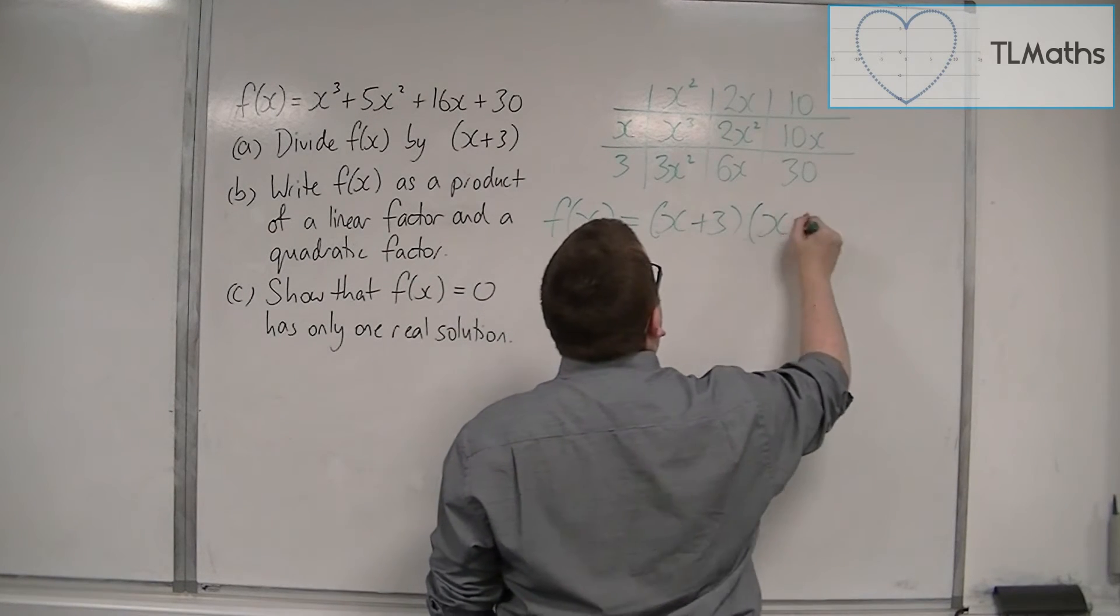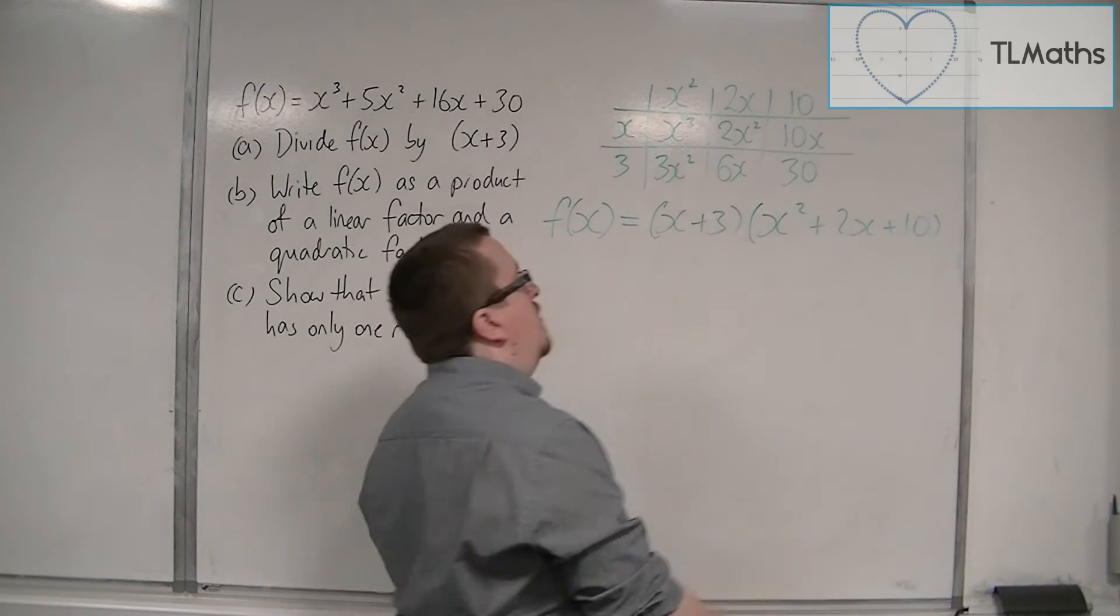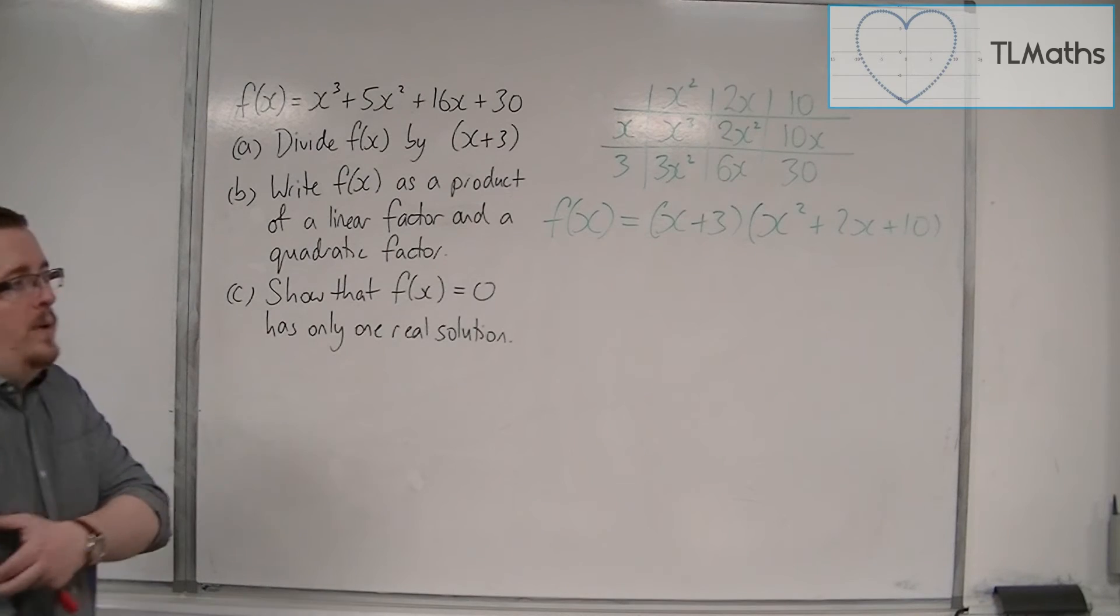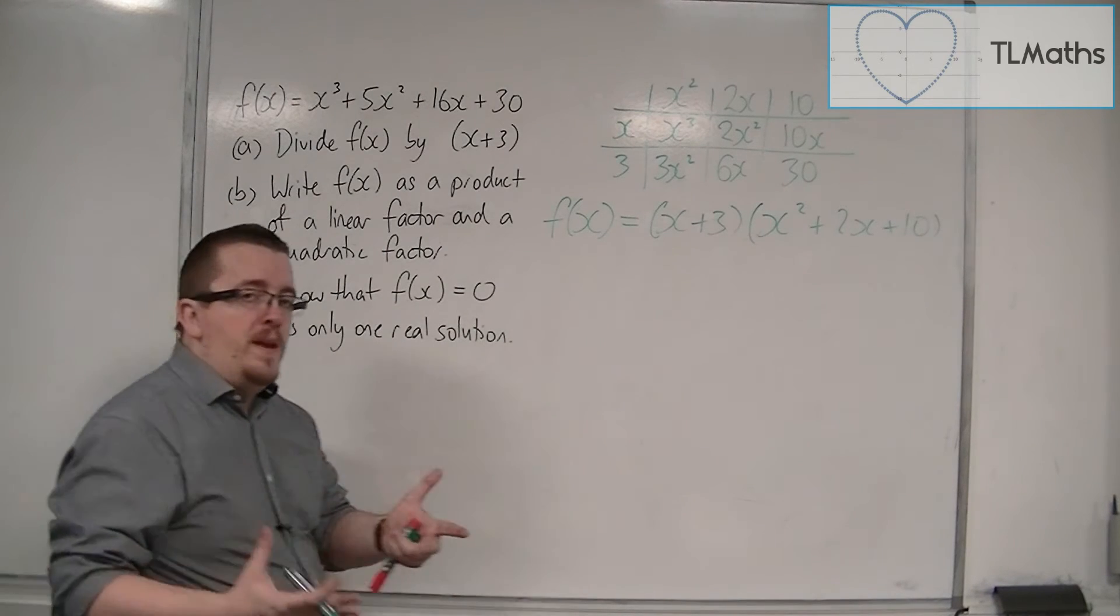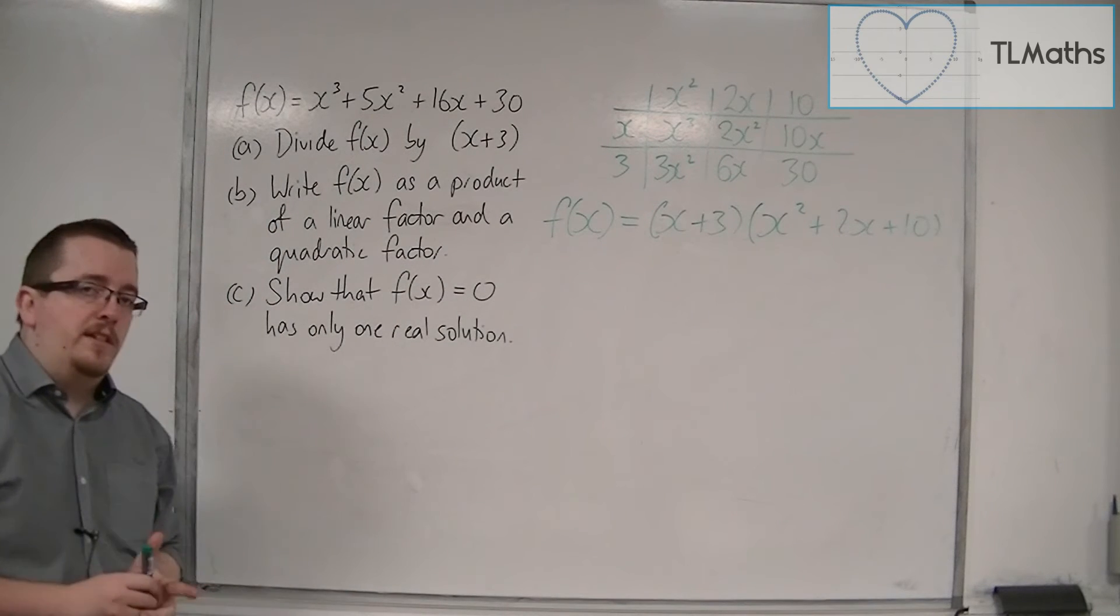The other factor is x²+2x+10, what I got in the top row. If you want to check, you should be able to expand those double brackets and get back to what we started with.